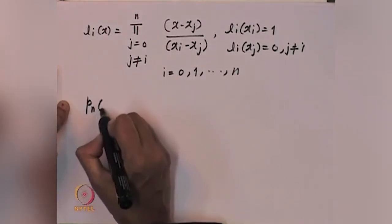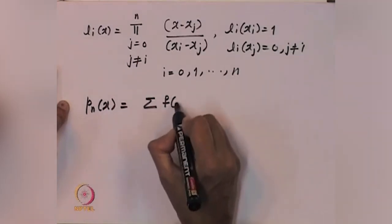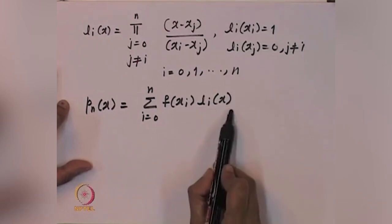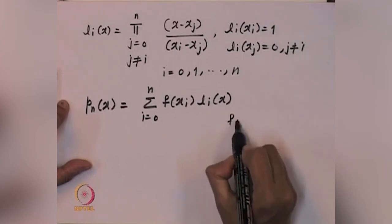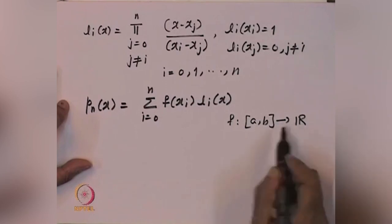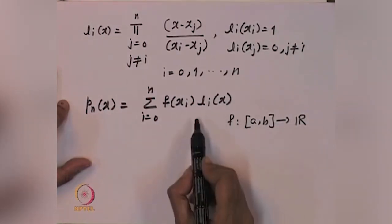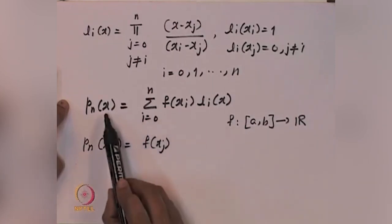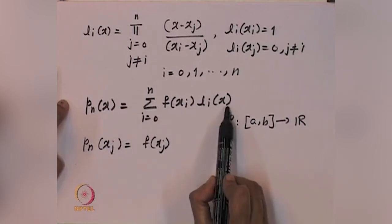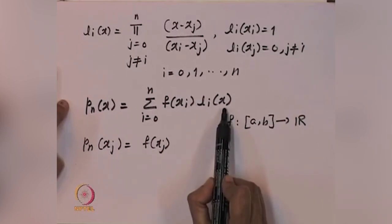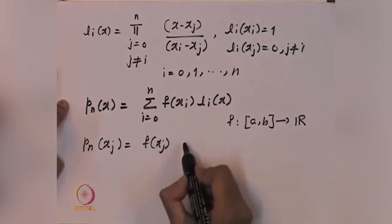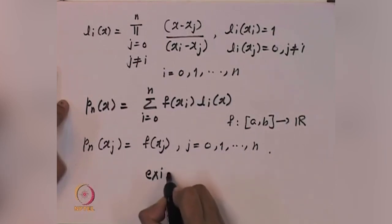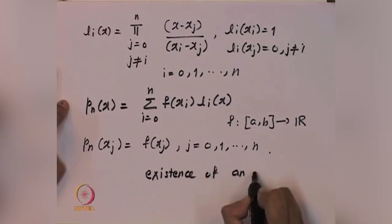Consider p_n(x) = summation of f(x_i) * L_i(x) for i from 0 to n. Here f is a function defined on [a, b] taking real values and assumed to be continuous. Now p_n(x_j) equals f(x_j) because when I put x = x_j, L_i(x_j) = 1 only when i = j, and all other values are 0. So p_n(x_j) = f(x_j) for j = 0, 1, ..., n. Thus we have proved existence of an interpolating polynomial.